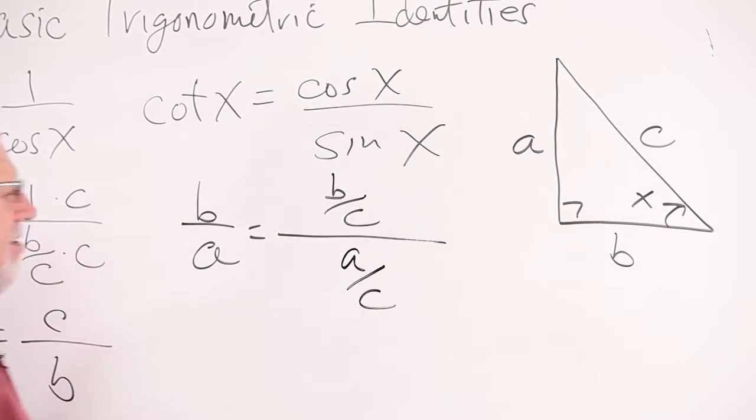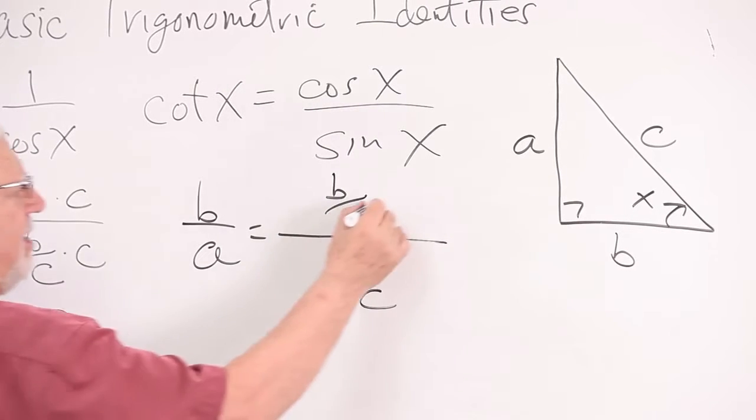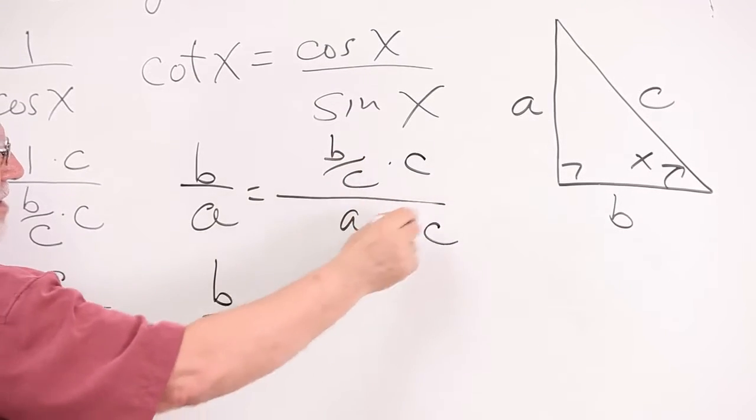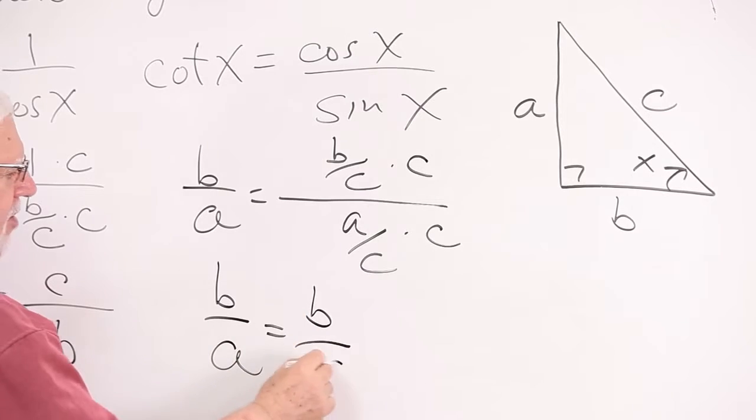And once again we have a little complex fraction. If we get rid of the little fractions by multiplying the numerator and denominator by the least common denominator, these cancel, these cancel, so you end up with b over a.